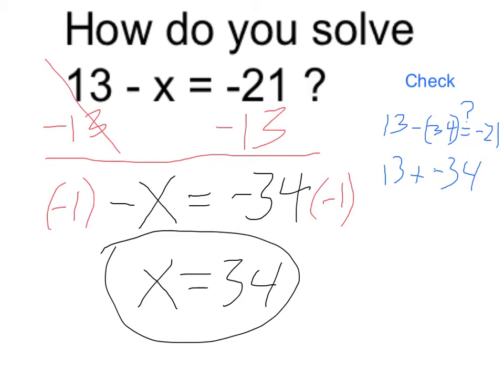So it's essentially like doing 34 minus 13 and making whatever I get negative because this negative dominates over the positive 13. And yes, of course, that is in fact negative 21. So it does check out.